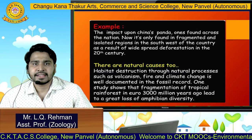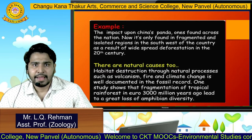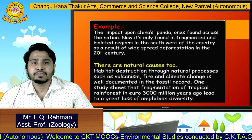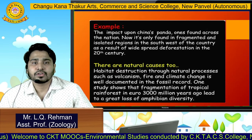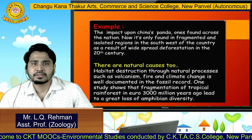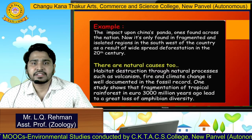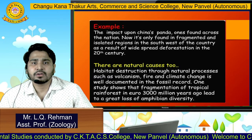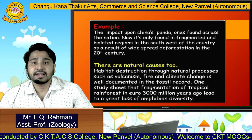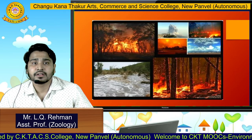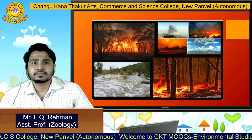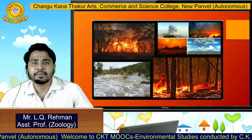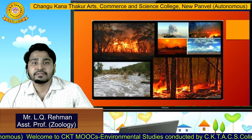But there are natural causes too. Habitat destruction through natural processes such as volcanism, fire, and climate change is well documented in the fossil record. One study shows that fragmentation of tropical rainforests in Europe about 300 million years ago led to a great loss of amphibian diversity. Forest fires cause deforestation, and extreme flooding and environmental issues also cause deforestation.